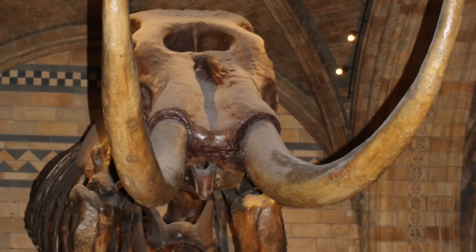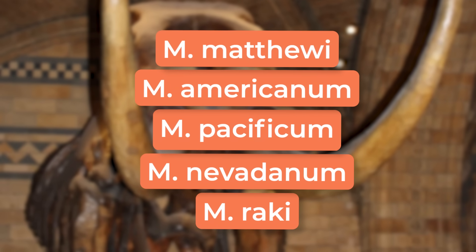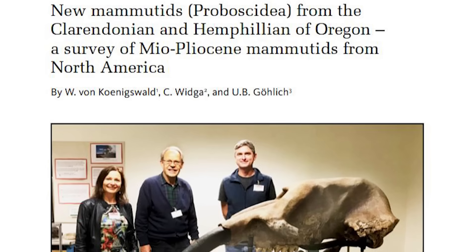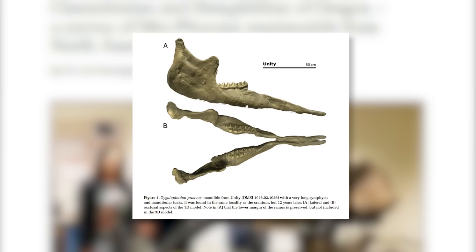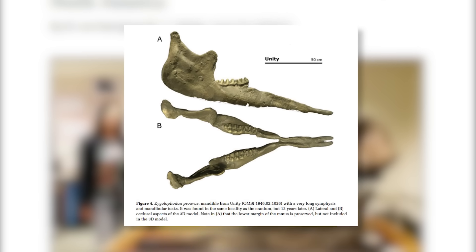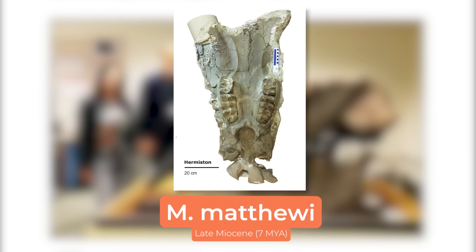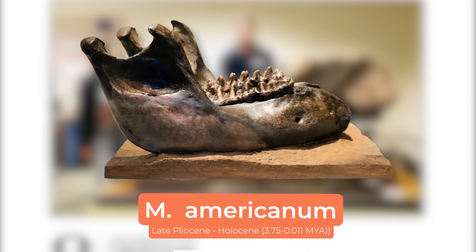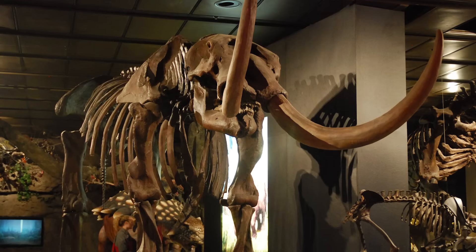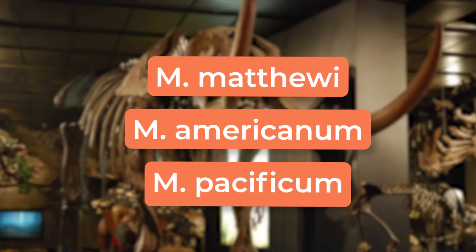For now, let's focus on the North American species of Mastodons. There have been many species listed under Mammut over its 100-year history since discovery, but based on a 2023 survey by Konigswald and colleagues from the University of Oregon, there's a notable evolutionary trend toward shortening of the mandibular symphysis and the animal's lower jaw tusks. The three most generally accepted species are Mammut matthewi, the oldest evolving around 7 million years ago; Mammut americanum, the American Mastodon; and Mammut pacificus, the recently discovered Pacific Mastodon.